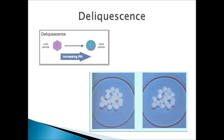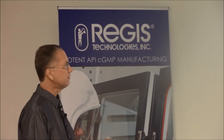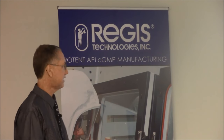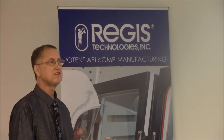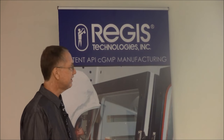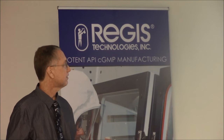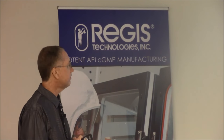One important phenomenon is deliquescence — a funny name synonymous with hygroscopicity. As humidity increases in the environment, material will take up water so much that it might self-dissolve. There really isn't a lot out there specifically on this topic with details. It is a very unideal trait for any drug substance.